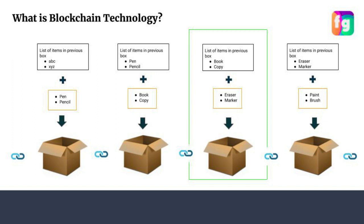Whenever you open the third box, you'll see that some changes have definitely been made to the previous box, because you already have the list of items. So first, you are adding a security feature here. Second, if you see — in the current third box, you have the items of that box plus the list of items from the previous box, and that previous box also has its items plus its own list from the box before it. So indirectly, the third block contains information about all the blocks behind it — you have created a chain, an interconnection of boxes.